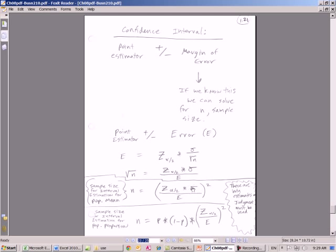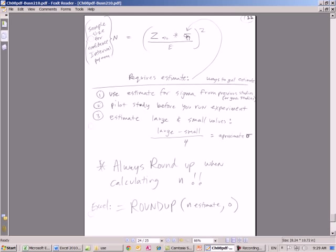Now sigma and the p need to be estimated. So here it is, we rewrote it and we're solving for n.